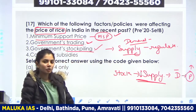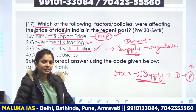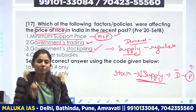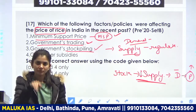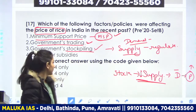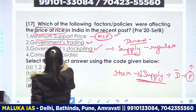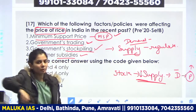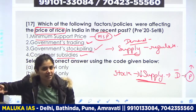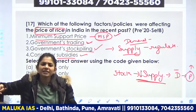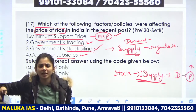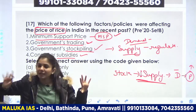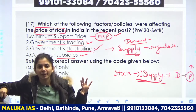When the government is not stocking but supply increases in the market, demand is also increased, so price becomes less. Next: consumer subsidies. Consumer subsidies provide karne se price par direct effect aana hai. Subsidies di toh price kya ho gaya — cost toh utni, market price kam ho gaya.